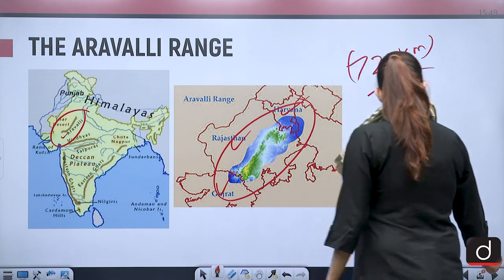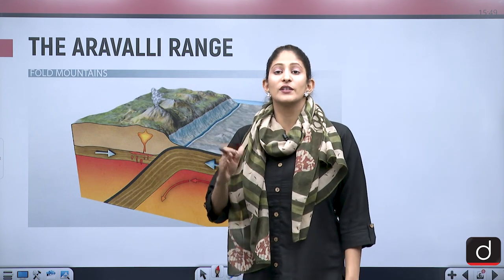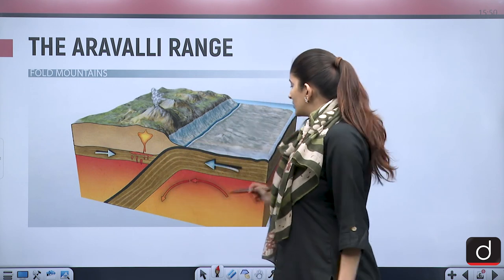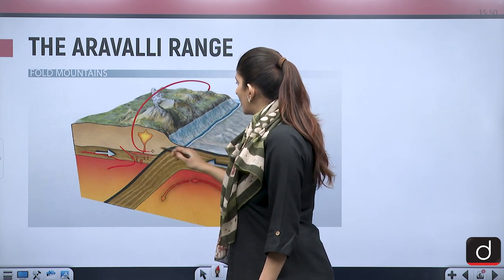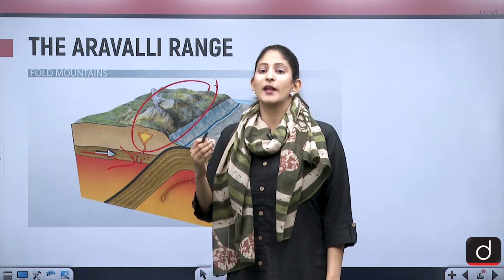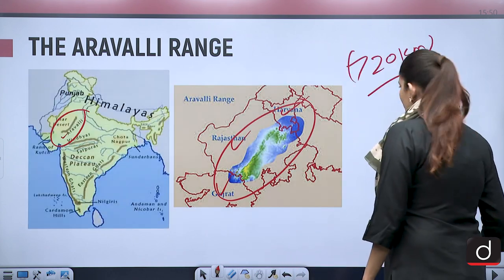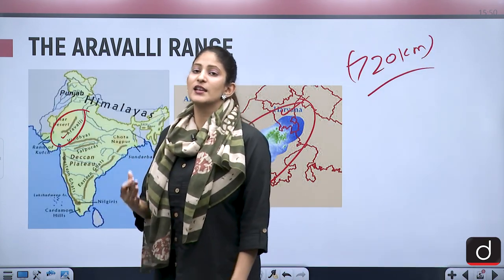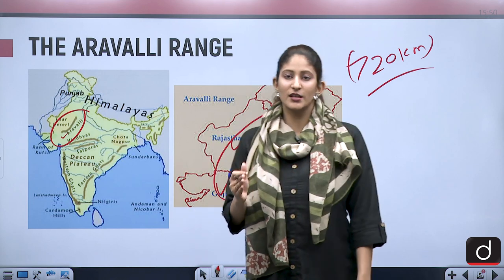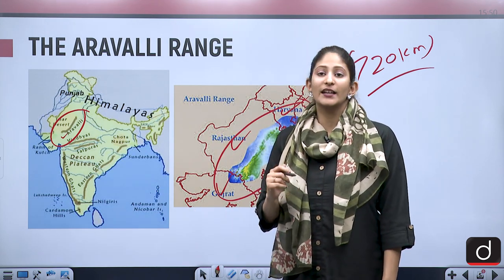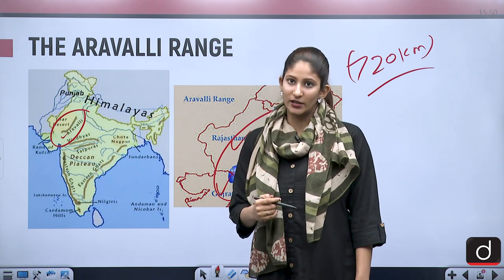Folding basically occurs when one plate collides with another plate, and due to compression between the two plates, the sediments compress themselves and rise in height. The Aravali range, which is now a residual range, has peaks ranging from 300 to 600 meters. The highest peak is in the Mount Abu region — that is Guru Shikhar.